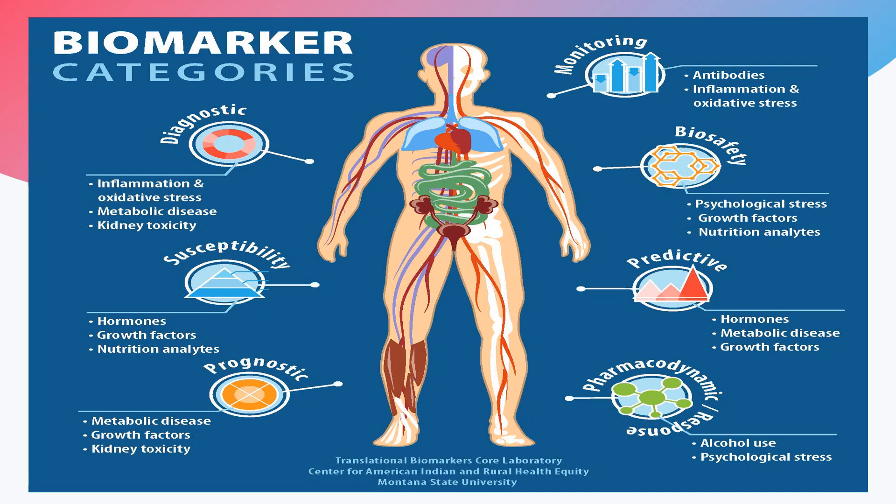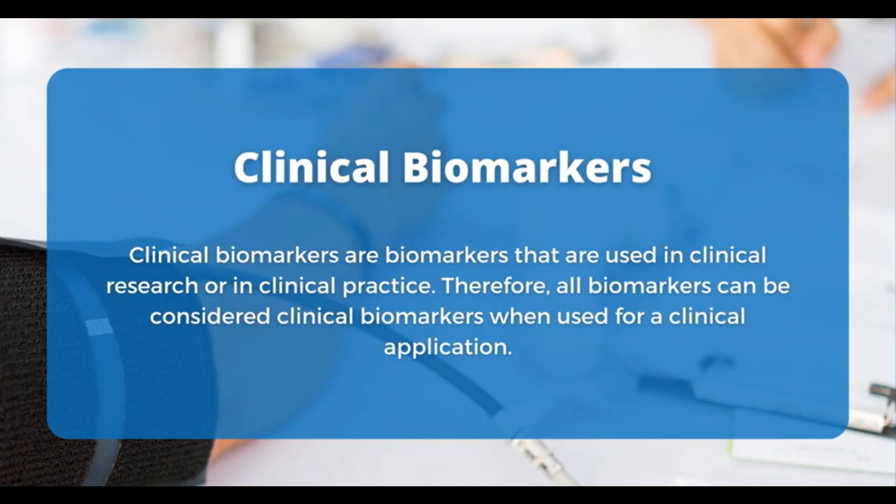Examples within each class: diagnostic biomarkers include inflammation, oxidative stress, metabolic disease, and kidney toxicity. Susceptibility biomarkers include hormones, growth factors, and nutrition analytes. Prognostic biomarkers include metabolic disease, growth factors, and kidney toxicity. Monitoring biomarkers include antibodies, inflammation, and oxidative stress. Safety biomarkers include psychological stress, growth factors, and nutrition analytes. Predictive biomarkers include hormones, metabolic disease, and growth factors. Pharmacodynamic or responsive biomarkers include alcohol use and psychological stress.